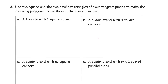Now use the square and the two smallest triangle tangram pieces to make the following polygons. This works a lot better if you use a straight edge to draw your pictures — it really helps them come out looking decent. I'm using something like a business card; you could use the edge of a playing card or an envelope — anything flat and straight.